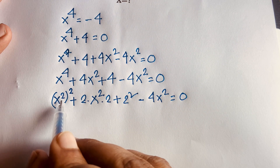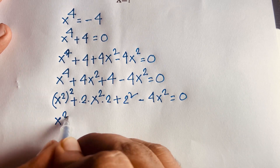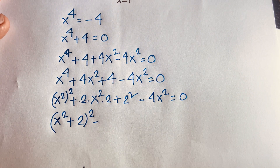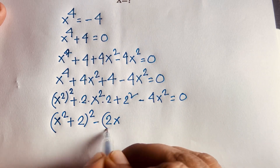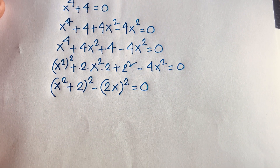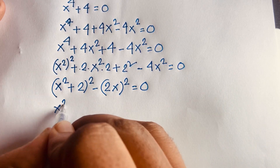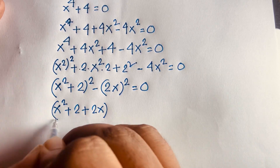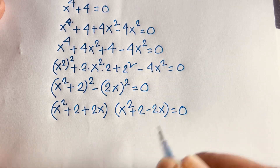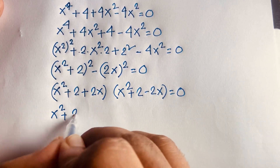Recognizing (x² + 2)² - (2x)² as a difference of squares — a² - b² = (a + b)(a - b) — I can factor this as (x² + 2x + 2)(x² - 2x + 2) = 0.